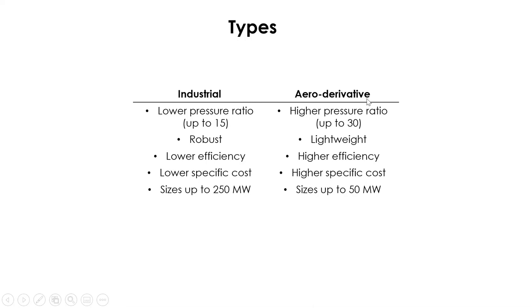On the other hand, the aero derivative machine can operate at a high pressure ratio up to 30, is lighter, more efficient, more expensive, and smaller in size up to 50 MW. Aero derivative gas turbines are typically used for offshore applications where weight and efficiency are premium, to drive compressors for natural gas pipelines, and for standalone power generation for peak periods of high power demand.